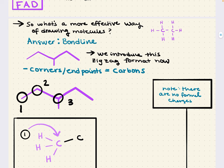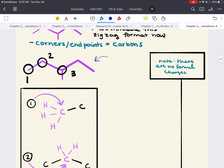Let's look at an example. In this molecule, every endpoint and every corner is a carbon — implied within the bondline structure. At position one, this carbon is attached to one other carbon. Carbon forms four bonds and it's neutral, so the other three bonds must be implied hydrogens. At position two, a neutral carbon bonded to two other carbons means the other two bonds are implied hydrogens. At position three, a carbon bonded to three other carbons means the fourth bond is an implied hydrogen.